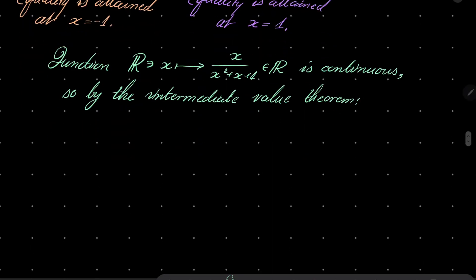Since minus 1 is attained and 1 third is attained, and no number below or above these numbers is attained, the range of our function is actually the interval minus 1, 1 third.